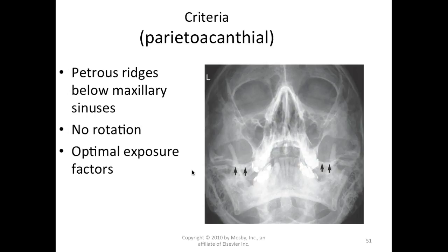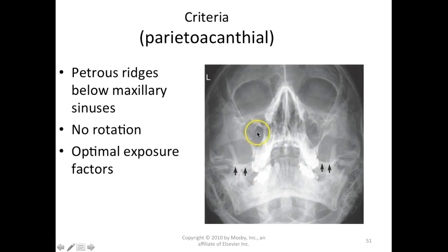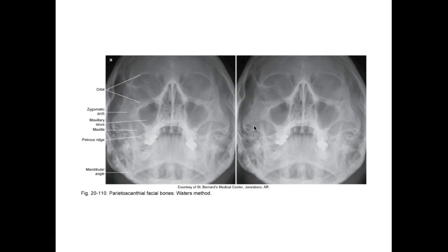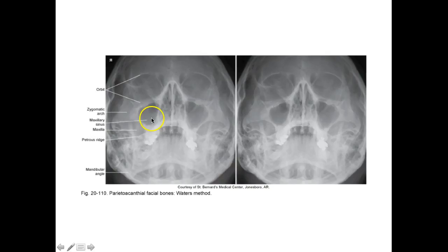For Waters view evaluation, we want the petrous ridges below the maxillary sinuses, no rotation, and proper exposure. To assess rotation, measure from the outer canthus side to side. Look at the petrous ridges — they should be out of the maxillary sinuses. These sinuses can be quite large, making it harder to get the ridges clear. A good image shows open sinuses with petrous ridges clearly below.